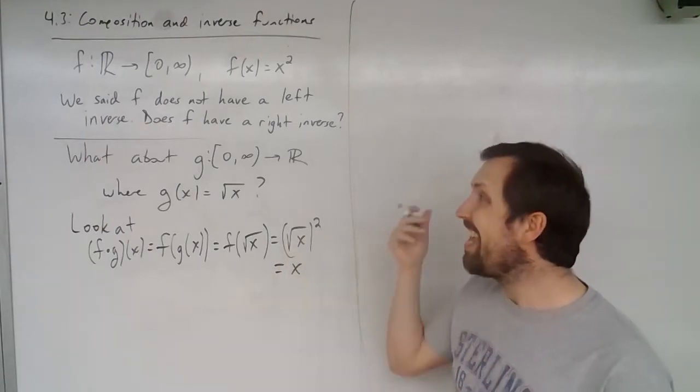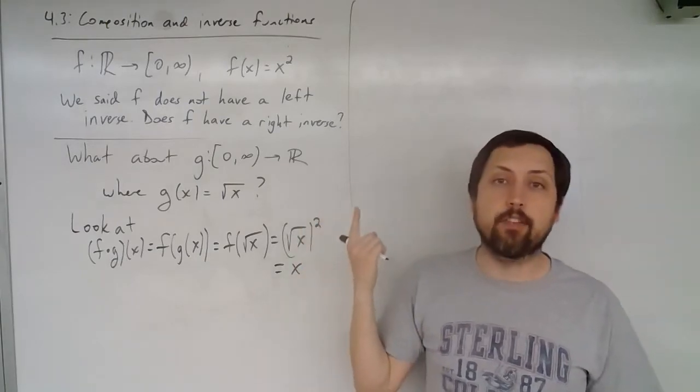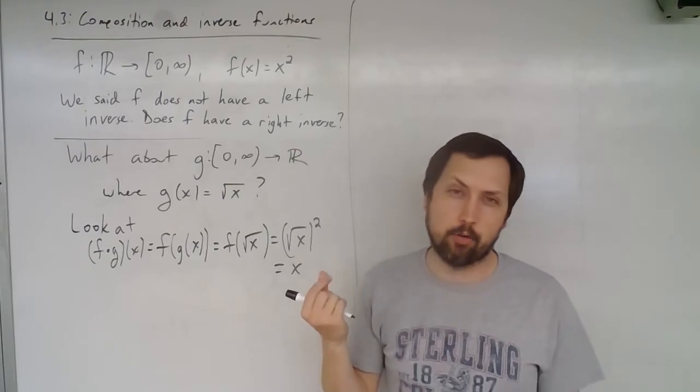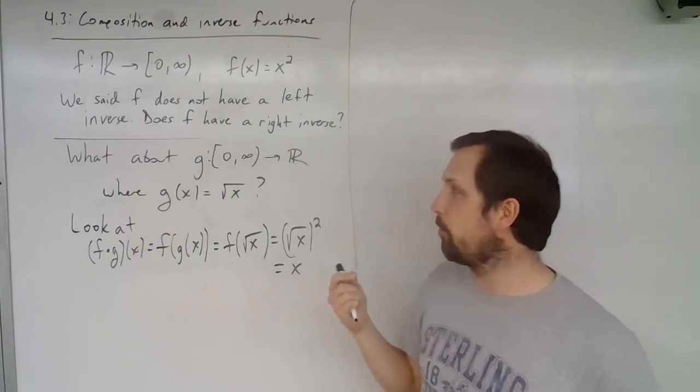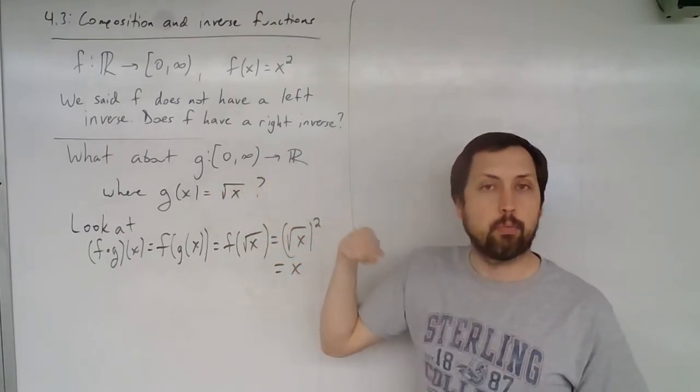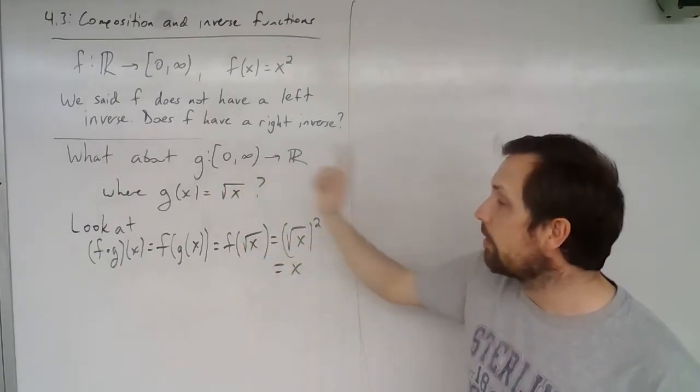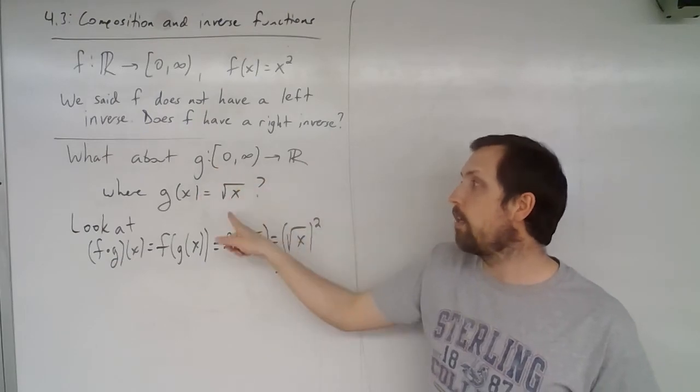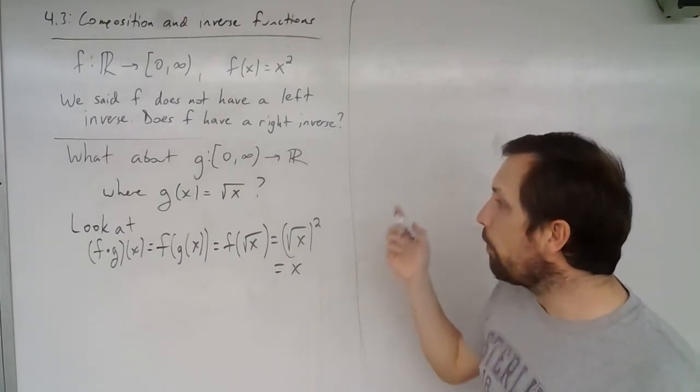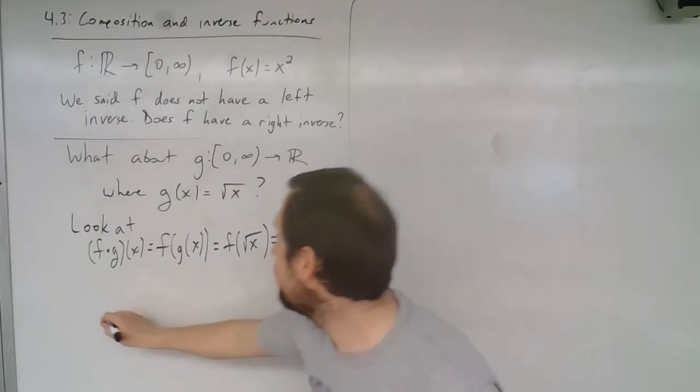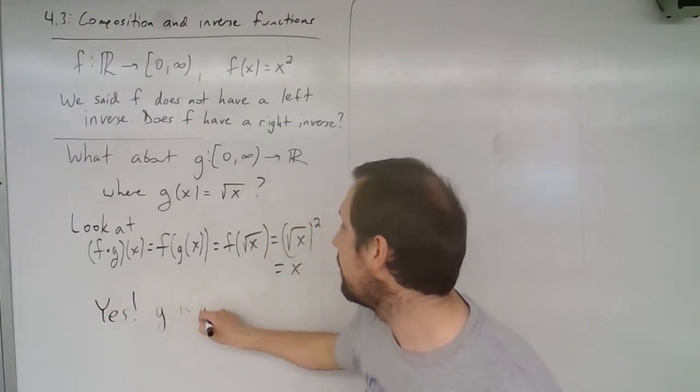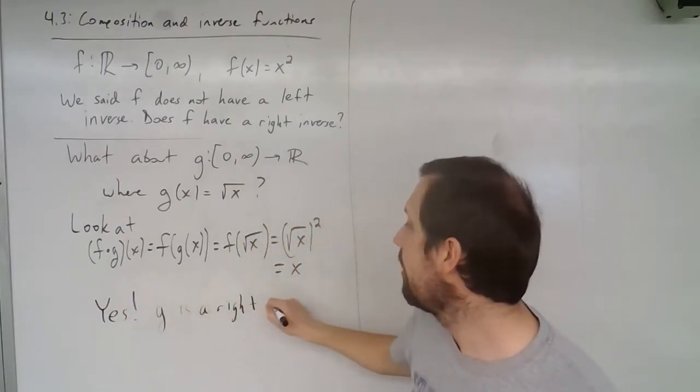Now we ask ourselves the question, is g still a well-defined function? Because indeed we get this seems to be true, but have we cut corners, and did we actually allow every element in the domain to be mapped to something in the codomain? We should check that. But indeed we see that yes, you can plug in any non-negative number into square root and then you get back a real number. Excellent. So what we get here is yes, g is a right inverse.